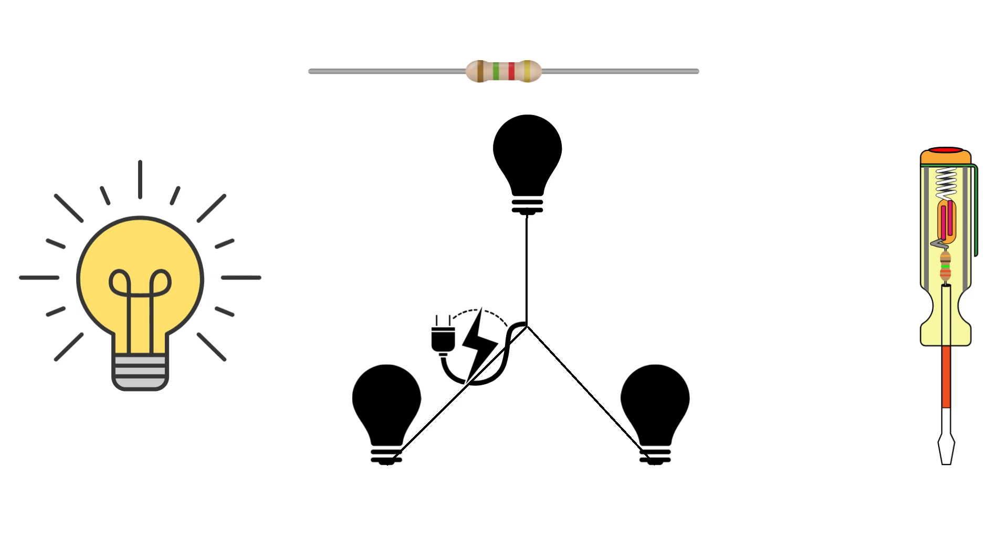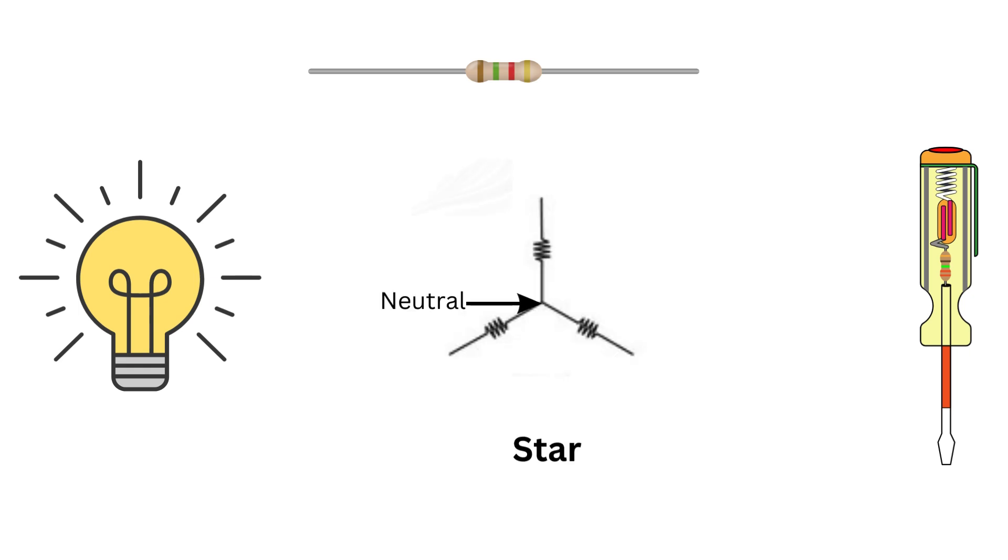Think of it like this. Imagine you are at the center of the star and each line going out represents a different component. The power comes in at the center and it gets distributed along the lines. The star connection is often used because it helps balance the load and provides a neutral point which can be really useful for safety and stability.